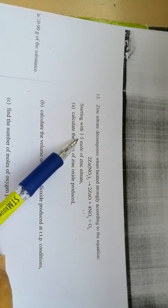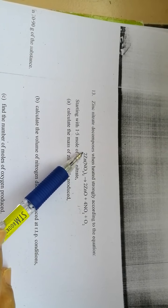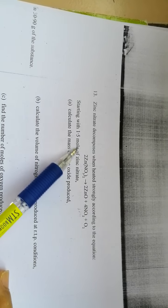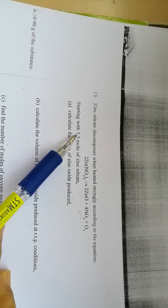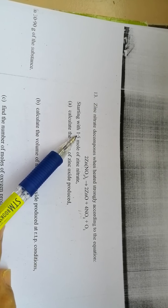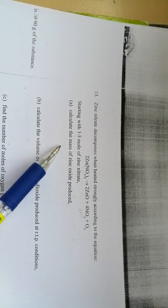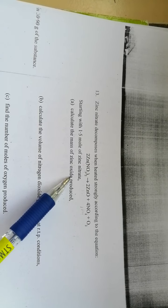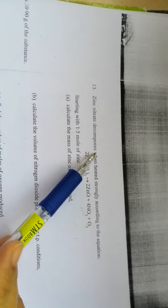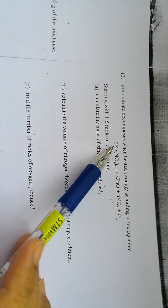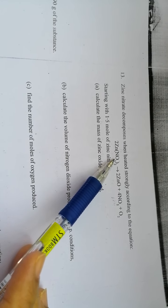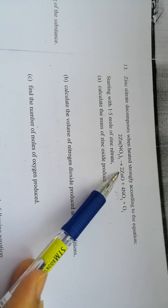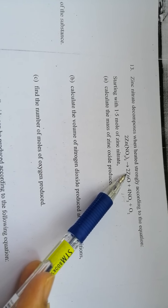So starting with 1.5 moles of zinc nitrate instead of 2 moles, calculate the mass of zinc oxide produced. Our ratio here is for every 2 moles of zinc nitrate, there's also 2 moles of zinc oxide produced.